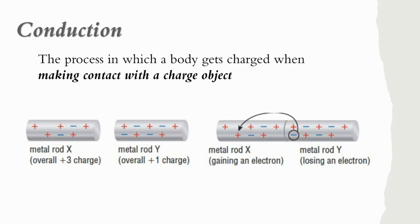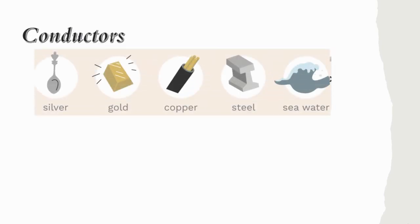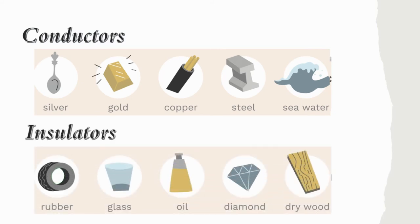Materials that allow electrons to flow freely are called conductors, such as metals. On the other hand, materials that do not allow electrons to flow easily through them are called insulator, such as rubber, glass, plastic, oil, diamond, and dry wood. And this is also the reason why electric wires have rubber coating to prevent electricity from flowing direct to our hands and to prevent electric shock.